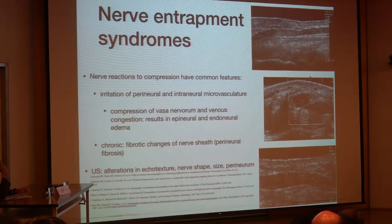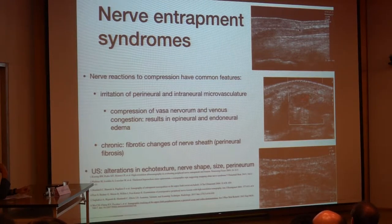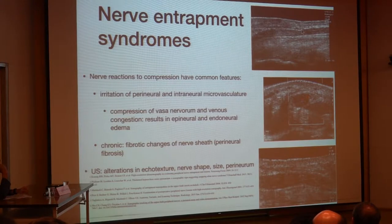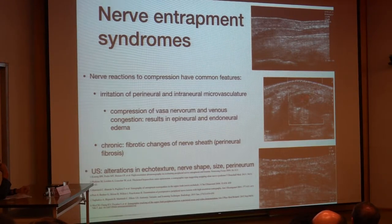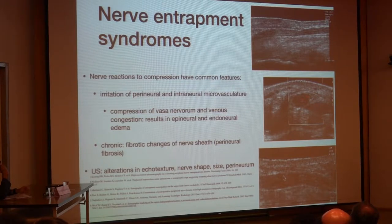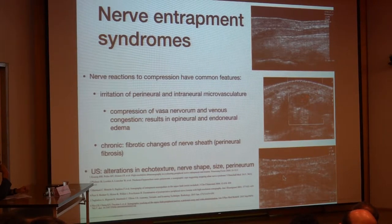In chronic stages, fibrotic changes cause increased echogenicity in the nerve. We can also see the level of the compression — this is the normal size, then there is the compression site, and then the swelling. Finally, there is also loss of the fascicular echotexture due to the edema.